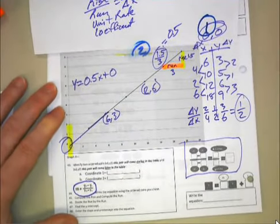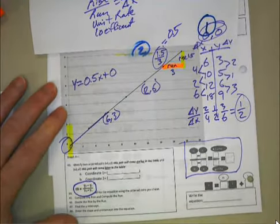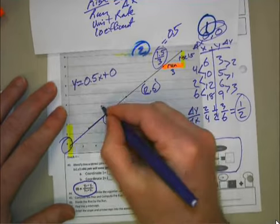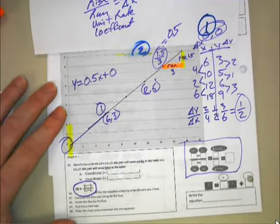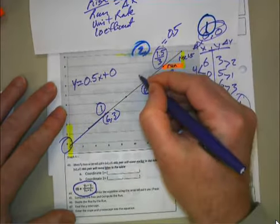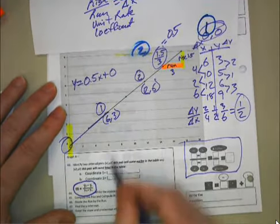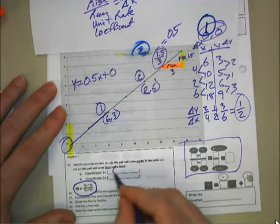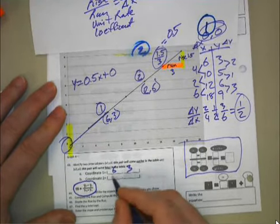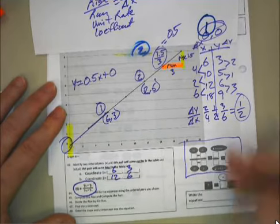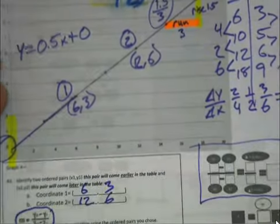And then you're going to label one coordinate one. And just like reading a book, you're going to read from left to right. From left to right, whichever one comes first is coordinate one. And whichever one comes second is coordinate two. And you're going to take your coordinate one pairs. You're going to fill them in here: 6, 3, coordinate 2, 12, 6. And then you're going to put them in the proper place in the graphic organizer.